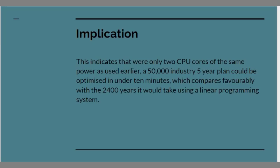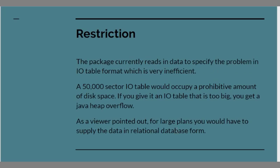What does this mean? It indicates just with I ran that using two CPU cores, this indicates that using the harmony algorithm you could solve a plan for 50,000 industries over five years in under 10 minutes. That's just with a microprocessor using two cores not a powerful supercomputer. That compares very favorably with the 2400 years it would have taken to solve the same thing using LPSolve.